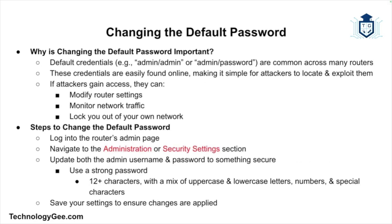Another critical step in securing your wireless network is to change the default password. Most routers come with a default admin username and password like 'admin/admin' or 'admin/password.' These default credentials are widely known and often listed in online databases, making it easy for attackers to gain access. Once an attacker has access to your router's admin page, they can change settings, monitor network traffic, and even lock you out of your own network.